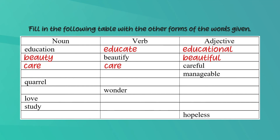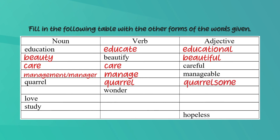For the adjective 'manageable', you can create two nouns: 'management' and 'manager', and the verb is 'manage'. Next you have the noun 'quarrel' — the verb is also 'quarrel' and the adjective is 'quarrelsome'. Next you have the verb 'wonder' — the noun is also 'wonder' and the adjective is 'wonderful'. Then for 'love', the noun and verb are both 'love', and there are two adjectives: 'lovely' and 'loving'.